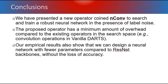In conclusion, we have presented a new operator called nconf to search and train a robust neural network in the presence of label noise. The proposed operator has a minimal amount of overhead compared to existing operators in the search space. Our empirical results also show that we can design a neural network with fewer parameters compared to ResNet backbones without loss of accuracy. Thank you.